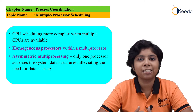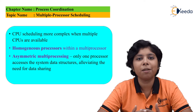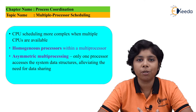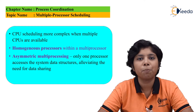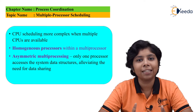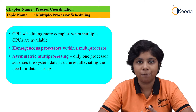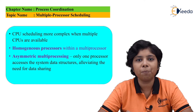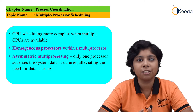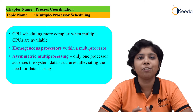This multiprocessor scheduling can be done with two main approaches. The first approach is asymmetric multiprocessing. In asymmetric multiprocessing, there is a single processor which takes the scheduling decisions, the processing activities, and other system activities as well. This is known as the master server, and any other processors are known as user processors which execute only the user processes.